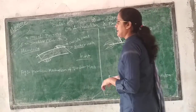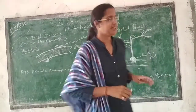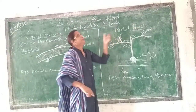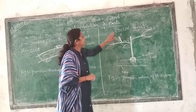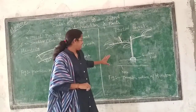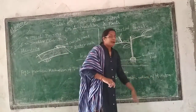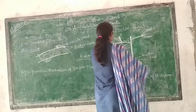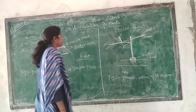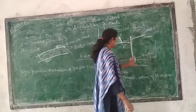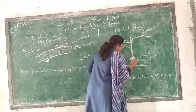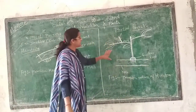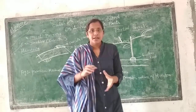Now let's see what is a partial parasite. A partial parasite is one that is only partially dependent on the host. A fine example is mistletoe. Mistletoe is a fine example of a partial parasitic plant. Here you can see the host plant — a branch of a plant on which the mistletoe is growing.